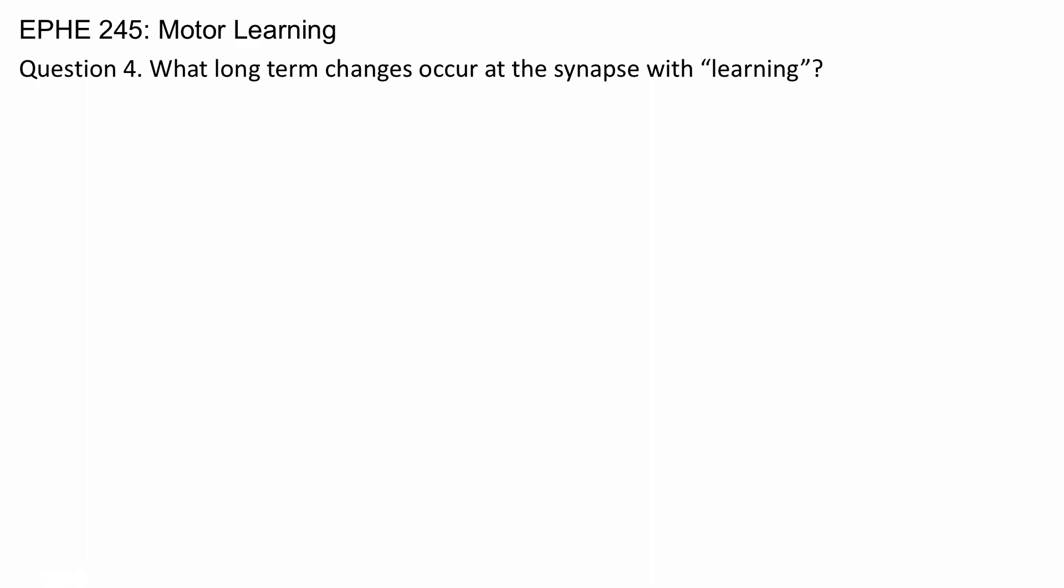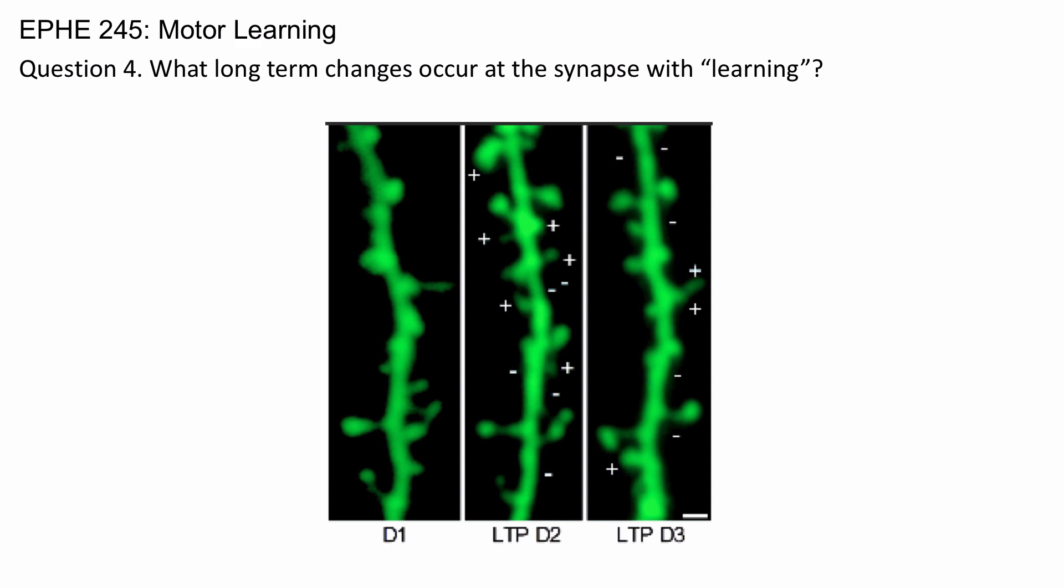Perhaps the most prominent change, however, is growth and pruning. What you're looking at here are the results from a study from a neuron that's been exposed to long-term potentiation, or is in a state of long-term potentiation.